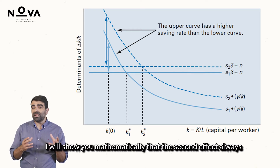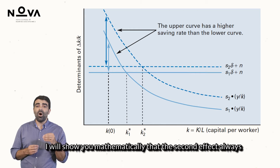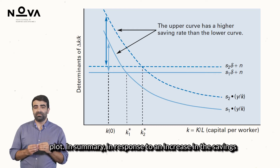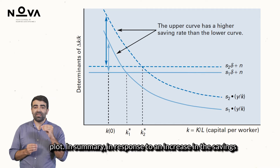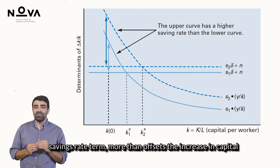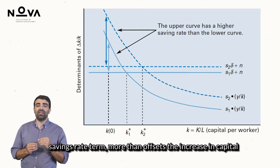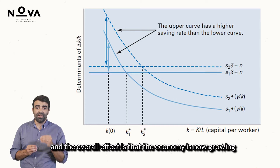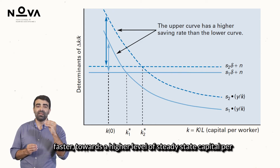I will show you mathematically that the second effect always dominates, and that is the case illustrated in the plot. In summary, in response to an increase in the savings rate, the increase in the average product times the savings rate term more than offsets the increase in capital dispersion plus depreciation. The overall effect is that the economy is now growing faster towards a higher level of steady-state capital per capita.